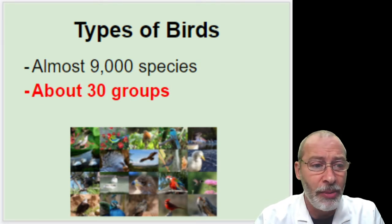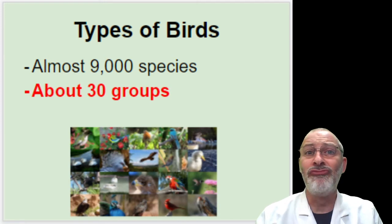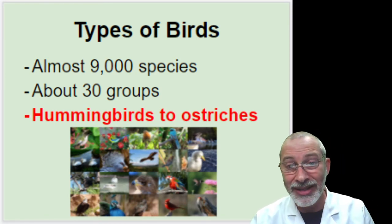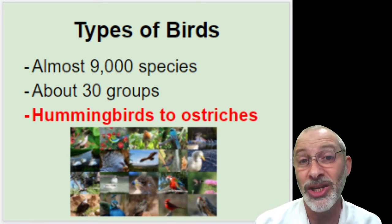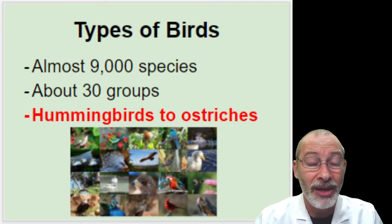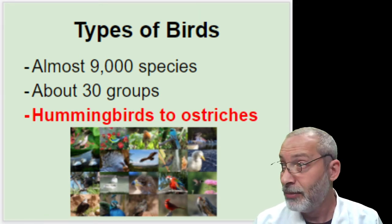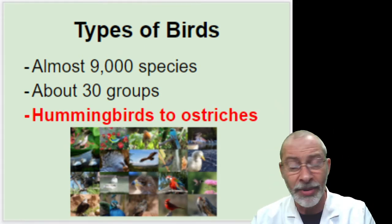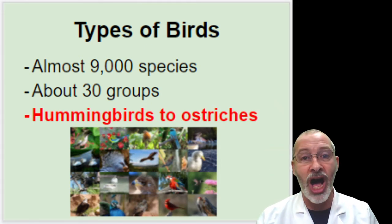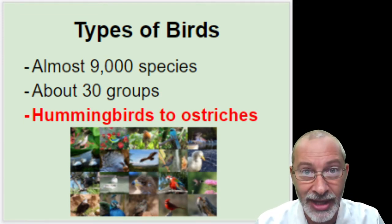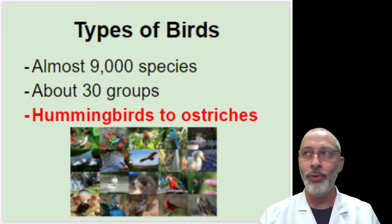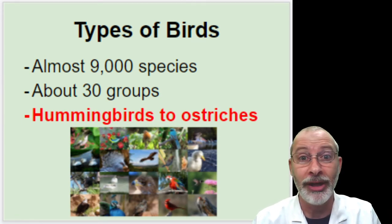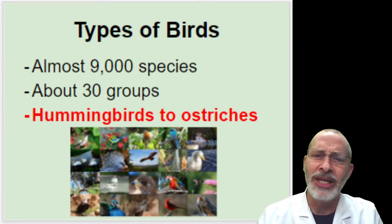Within those 9,000 species there are about 30 groups of birds, ranging in size from the very smallest hummingbirds, which can be really tiny, to the largest birds on the planet — ostriches. Ostriches can be so big, and they're flightless birds — they can't fly. They are actually large enough that you could ride on top of an ostrich like you could ride on a horse. If you don't believe me, there's a great movie, Swiss Family Robinson from the 1960s, and they have ostrich races in that movie. It's pretty cool — I remember that from being a little kid.